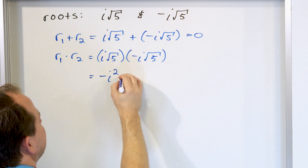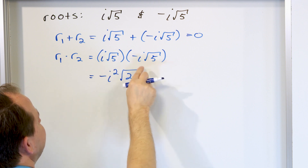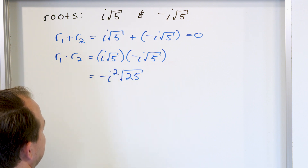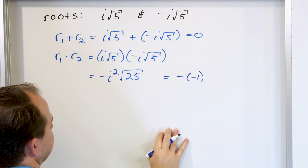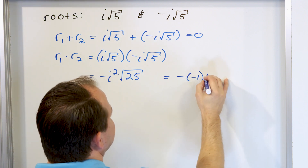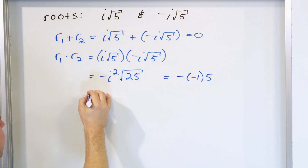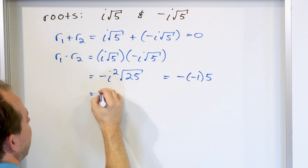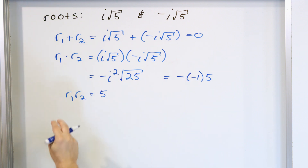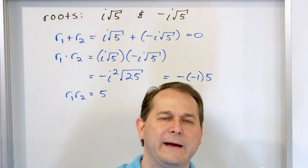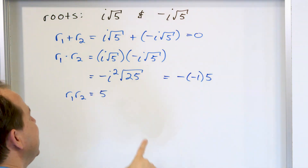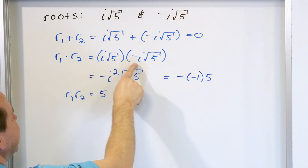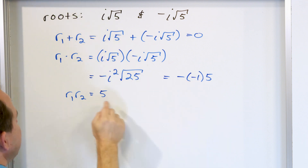When you multiply the radicals, it's going to be the square root of 25, because you can multiply what's under them. Then you have the negative sign, but i squared is by definition equal to negative one. Then times five, because that's what the square root of 25 is. Negative times negative is positive, so you get five. Most students do things so quickly they miss a sign. Carry the sign down, write that this is i squared, then substitute negative one — and you cannot go wrong.